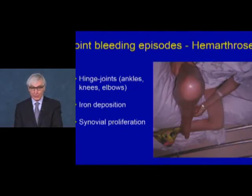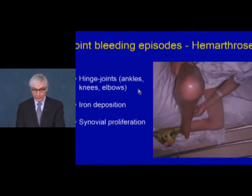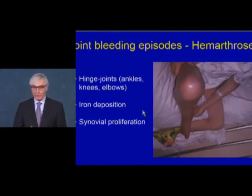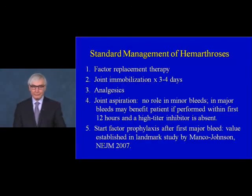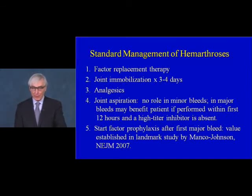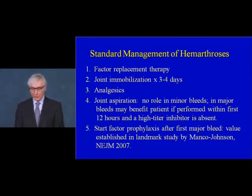Joint bleeds also occur, especially into hinge joints — ankles, elbows, knees, and hips. Iron deposition from bleeding drives proliferation of synovium, complicating functionality of limbs and leading to destruction of bony interfaces of the joint. Standard management of hemarthroses includes replacing the deficient clotting factor, joint immobilization for a period of days, and analgesics, but not usually joint aspiration — reserved only for very large bleeds where aspiration can be performed quickly. After the first major bleed, prophylaxis is started: giving factor every other day or at least three times a week. The value of this was established in a landmark study by Dr. Marilyn Manco-Johnson published in 2007.